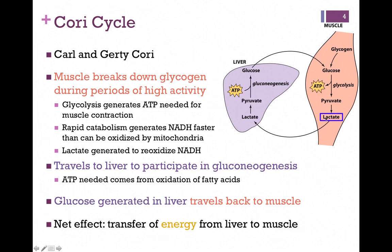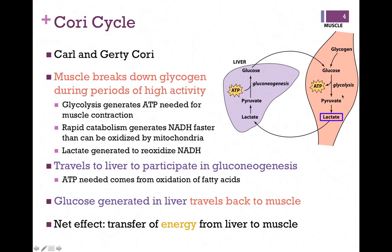Therefore, the muscle will re-oxidize NADH by reducing pyruvate to lactate. The lactate produced by the muscle then travels to the liver. The liver will easily convert that back to pyruvate, and remember, the liver can carry out gluconeogenesis, so it will take the pyruvate and convert it via gluconeogenesis back to glucose. This is an anabolic pathway, and so the energy to carry out gluconeogenesis — the ATP needed — comes from the oxidation of fatty acids. The glucose produced by the liver then travels back to the muscle so the muscle can continue its high level of activity.